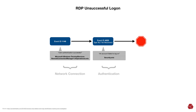Now let's look at an RDP unsuccessful logon — someone who attempted to connect via RDP but failed to log on. We start with event ID 1149 again, which may be confusing because its description is 'User Authentication Succeeded' even though this is an unsuccessful logon. That's because this refers to the network connection itself, which occurs prior to actual user authentication. Then we have event ID 4625 type 10 or 7, 'An account failed to log on,' located in the security log file.